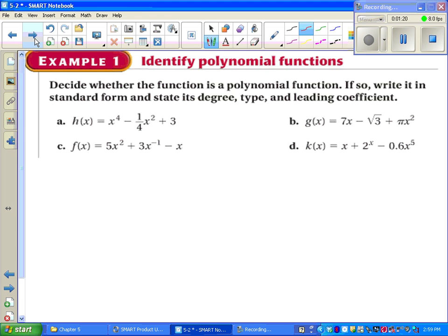Example one says decide whether the function is a polynomial function. If so, write it in standard form and state its degree, type, and leading coefficient. So let me talk about things you keep an eye out for. You're only allowed to have whole numbers for your exponents. You're not allowed to have any square roots or negative numbers for your exponents. You can have a square root in the original problem, just not as an exponent. Standard form means write these in order from highest degree to lowest degree. So in part a you see the highest degree is 4, so you'll write x to the fourth first.